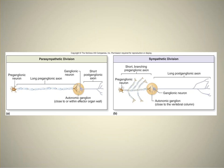Sympathetic, to the right: the preganglionic cell body is in the spinal cord, and a short preganglionic axon goes to a ganglion that's either close to the vertebral column or a little bit farther away. In this case, the preganglionic axon could actually be branched, different from the parasympathetic. The cell body for the postganglionic axon is in that ganglion, and it is long — it goes out to the effector organ.